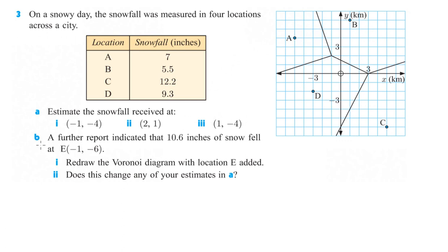Let's take a look at the next one, number 3. On a snowy day, the snowfall was measured in four locations across the city, A, B, C, and D. Estimate the snowfall received at (-1, -4). So (-1, -4) is here. So that's going to be closest to D, which is 9.3 inches. That's a lot of snow.